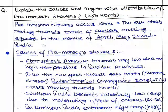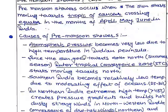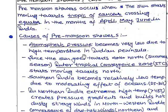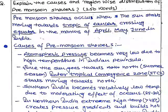Pre-monsoon showers occur when the sun starts moving towards the Tropic of Cancer, crossing the equator in the months of April, May, and June in India.